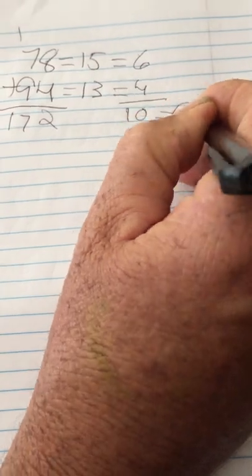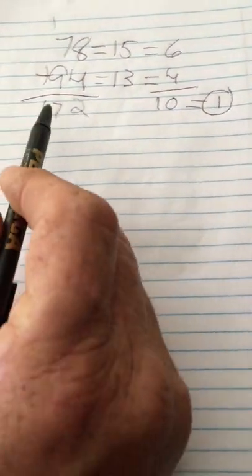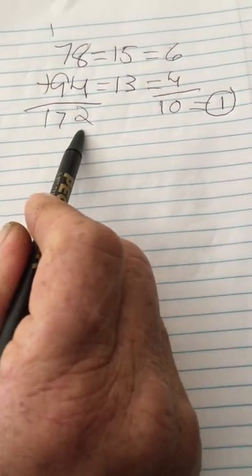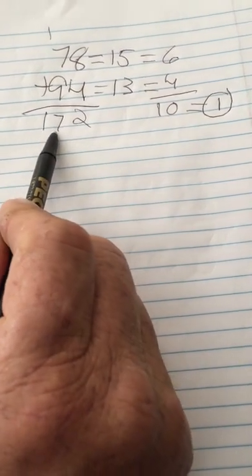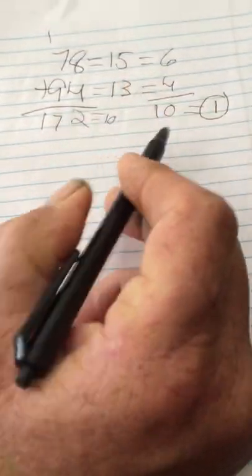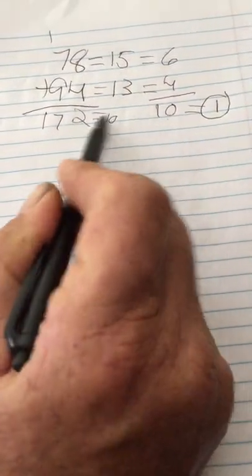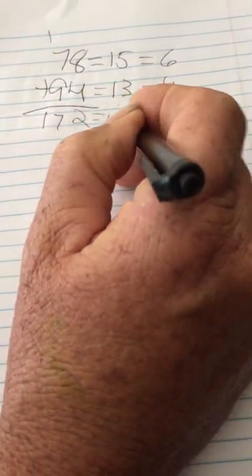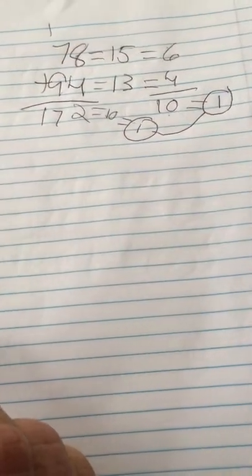Now let's go back to our answer, 172. 1 plus 7 is 8. 8 plus 2 equals 10. And as you can see, this happens to match, and 1 plus 0 equals 1. If these two single digits match, then you know your answer is correct.